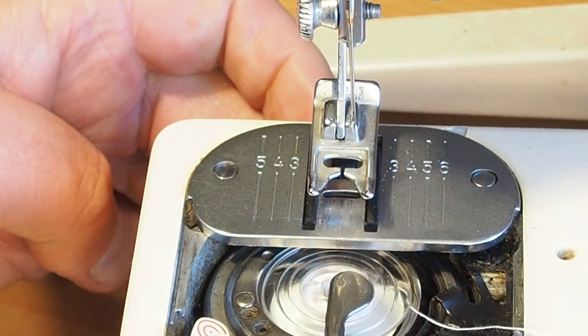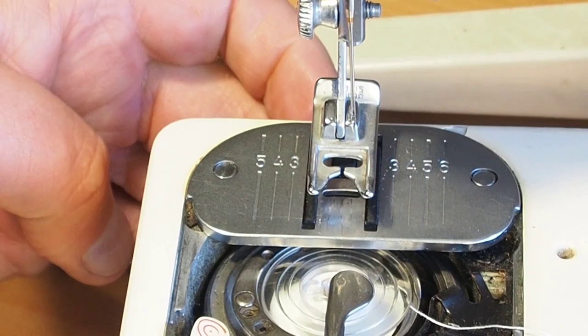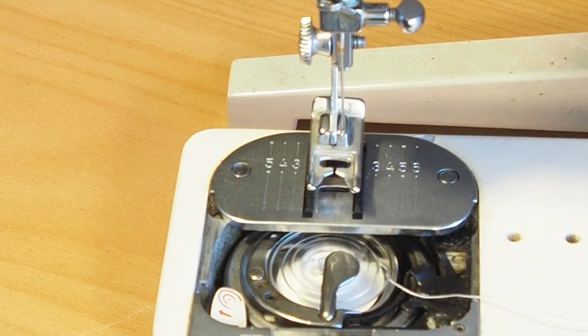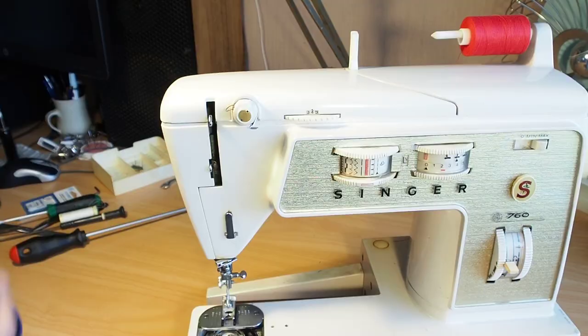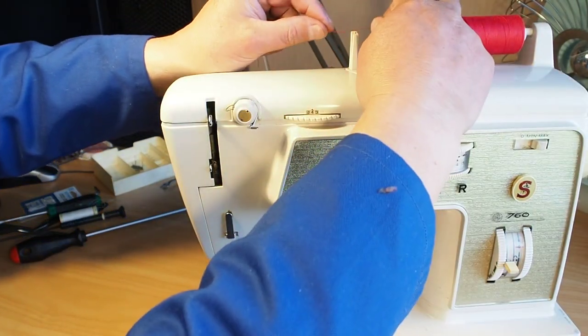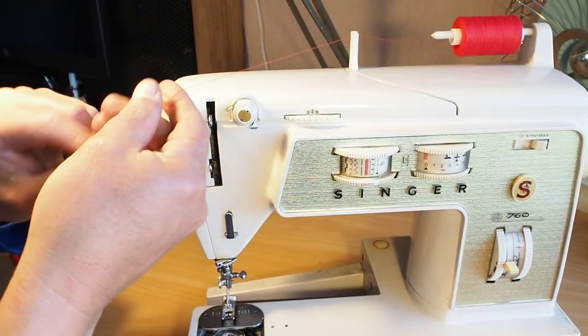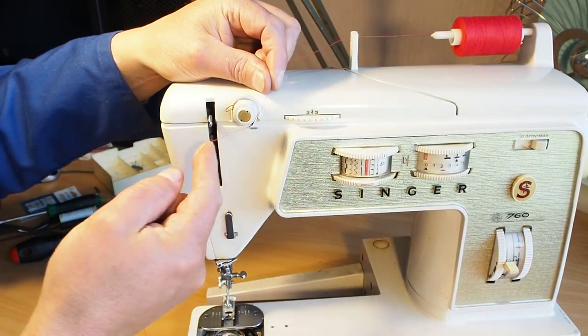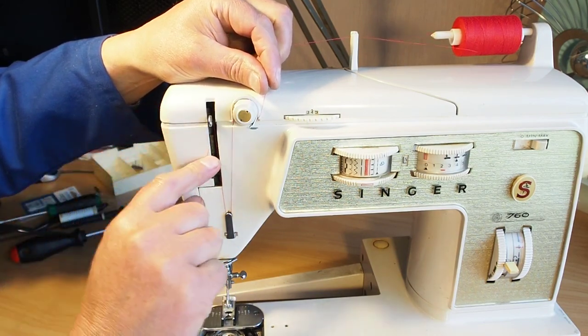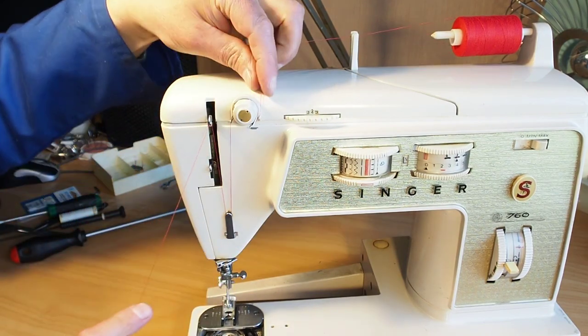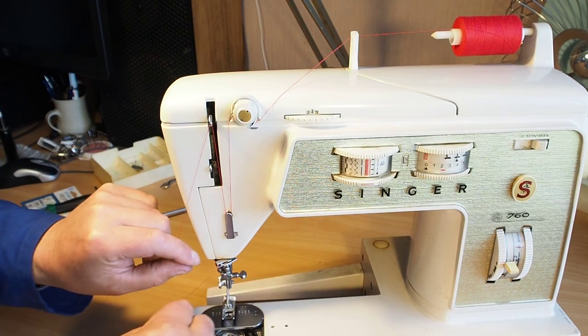Now we just pick up the thread as you would on any other sewing machine. I'm threading the top thread here. I won't go into too much detail; I've done videos on how to thread these machines. This is the 760. I think it's in the basics video that I did on this one. Let me just thread quickly there.